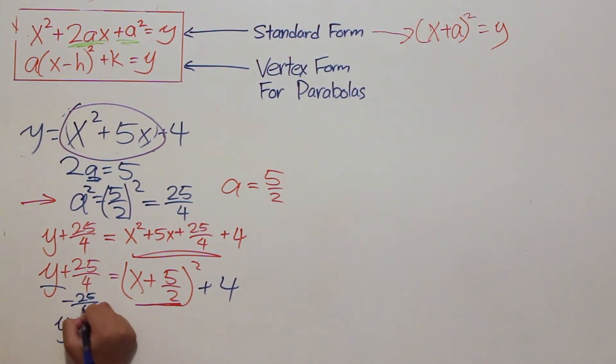With some simplification, we arrive at the answer of y equals quantity x plus 5 halves squared minus 9 fourths.